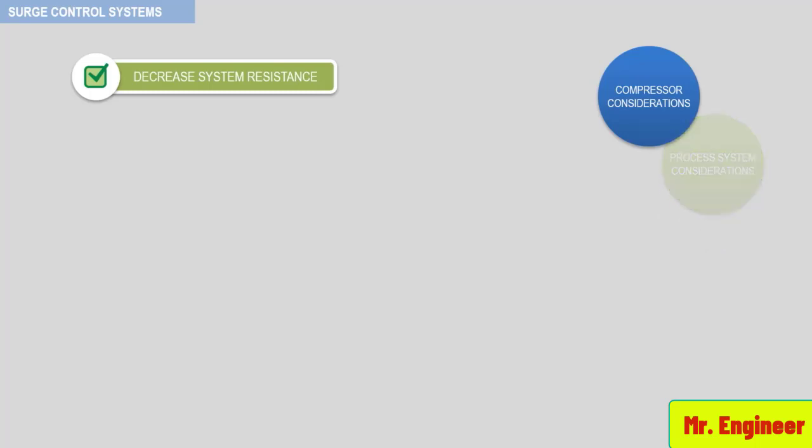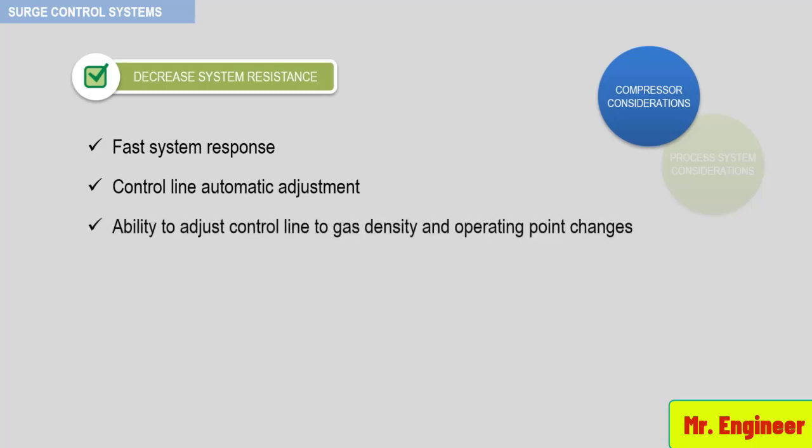Compressor considerations include fast system response, control line automatic adjustment, ability to adjust control line to gas density and operating point changes, recycle stream cooling, and check valve location.